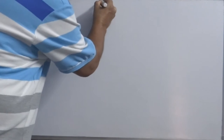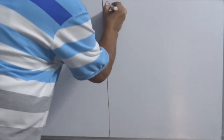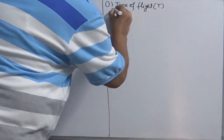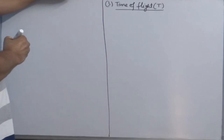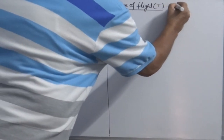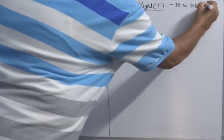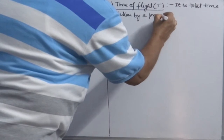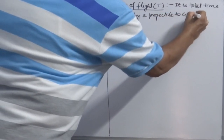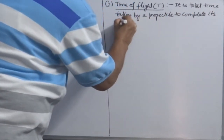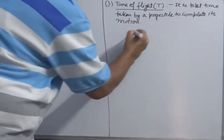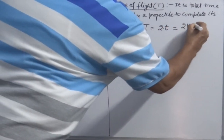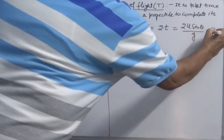Continuing with more expressions, the third is time of flight. How do we define the total time taken by a projectile to complete its motion? It is the total time taken by a projectile to complete its motion. Since the motion is uniform, time of flight is equal to 2t. From equation number 6, you know the value of t, so you can put 2u sinθ over g — this is equation number 7.